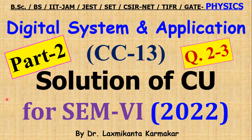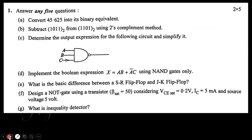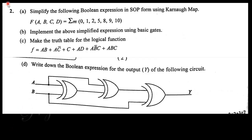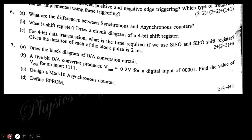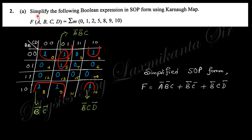Hello, welcome everyone. This is part two on the solution of Digital Systems and Applications for semester six of Calcutta University 2022. We already discussed questions one A to G in part one. In this part we will discuss question number two and three, and the next session will cover questions four, five, six, and seven. Let's start with question two A, which says: simplify the following Boolean expression in sum of products using Karnaugh map.